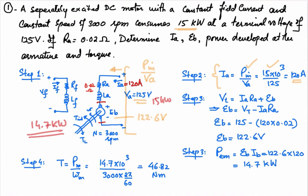Now we determine the electromagnetic torque. The torque equals the electromagnetic power divided by the speed of the machine. The speed is given as 3000 rpm, which must be converted to radians per second using the factor 2π/60. So the torque is 14.7 × 10³ divided by (3000 × 2π/60), giving a resultant torque of 46.82 newton meter.